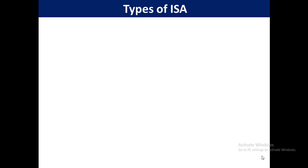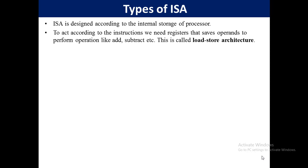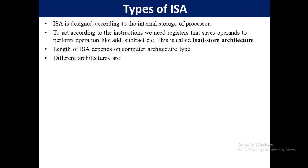There are different types of ISA. Instruction set architecture is basically designed according to the internal storage of the processor, so every processor has a different ISA. To act according to instructions, we need registers that save operands and perform operations like add, subtract, etc. This is called load-store architecture — an architecture in which we need registers. The length of ISA depends on computer architecture type; according to the architecture of the processor, the length can be long or short.